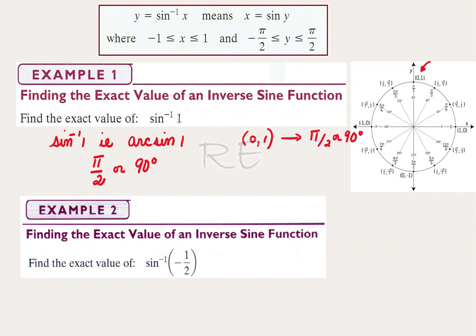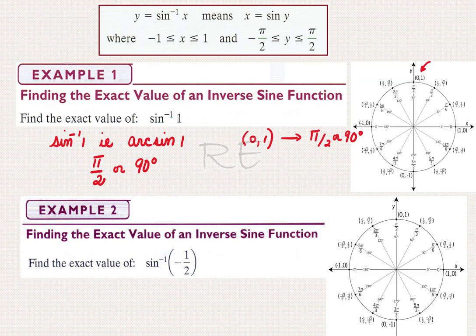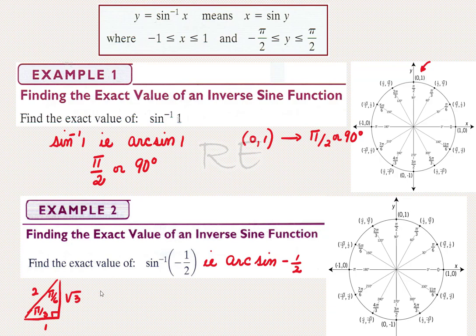For example 2, we are looking for an arc whose sine is exactly negative 1/2. We can rewrite the question as the arc whose sine is negative 1/2. Now, from the reference triangle, we can find an arc whose sine is 1/2, located in the first quadrant, and that'll be our reference angle, π/6. But in order to get negative 1/2, sine must be in the fourth quadrant.